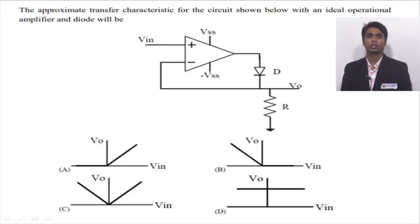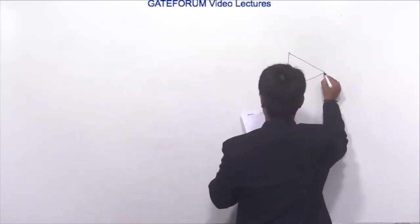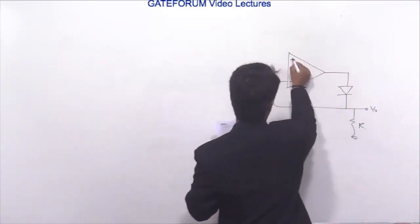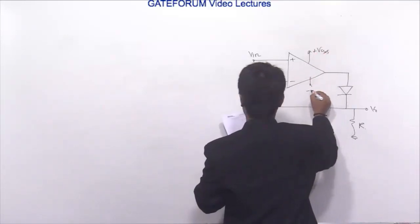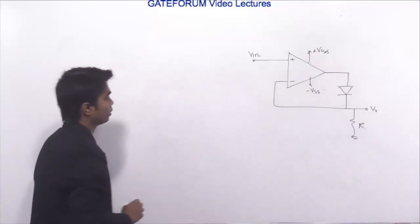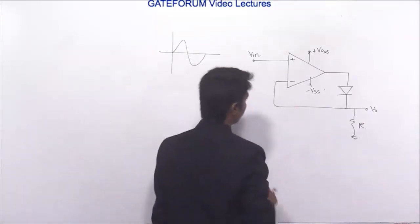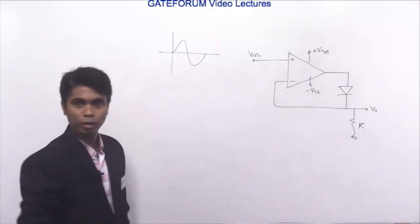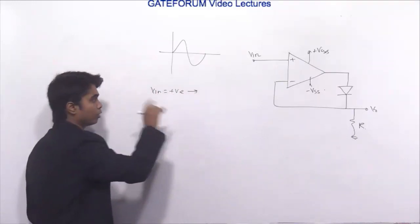The next question asks for the approximate transfer characteristic of a circuit with an ideal op-amp and diode. The circuit has V_in at the non-inverting input, a resistor R, diode, and output V_naught, with supply voltages plus and minus Vss. When V_in is positive, the output voltage Vx will be positive.